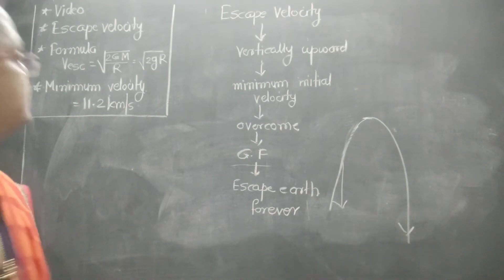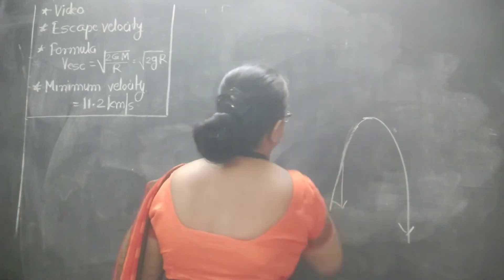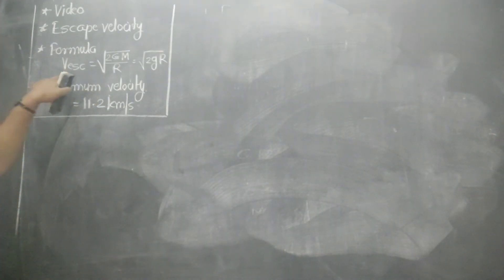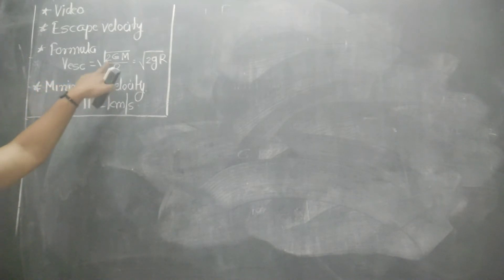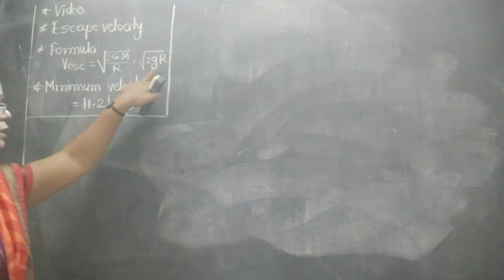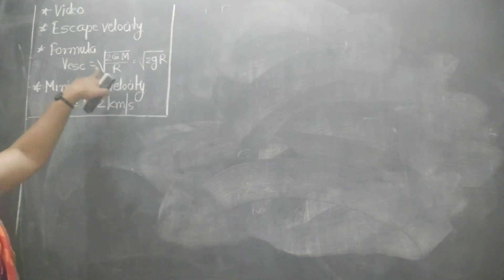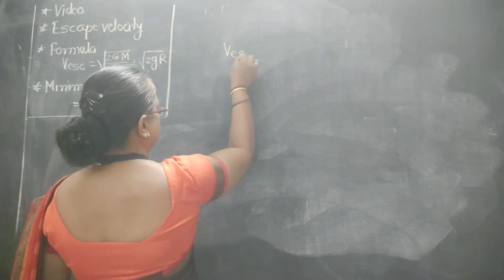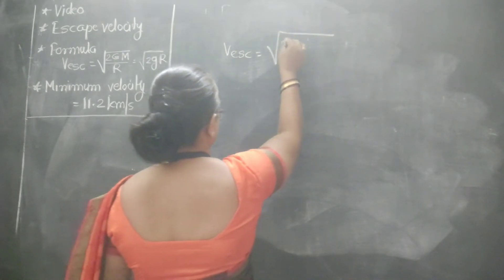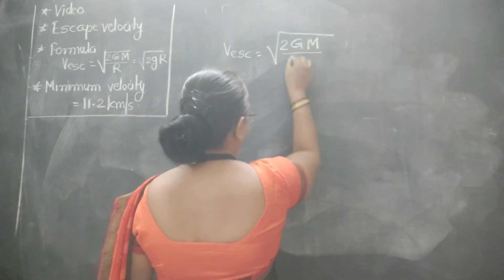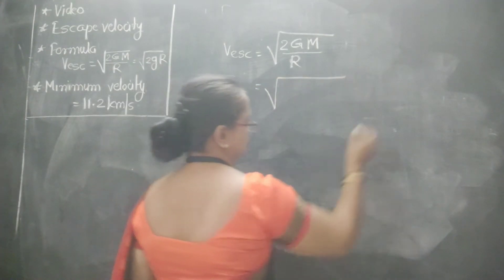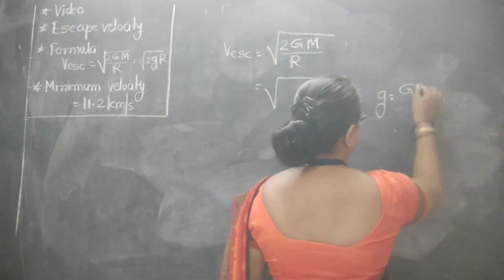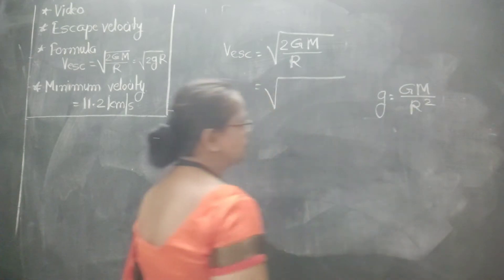Now what is the formula for escape velocity? The formula is: v_s equals square root of 2GM upon R. Here we know that small g, the acceleration due to gravity, is equal to GM upon R squared. We substitute this value.